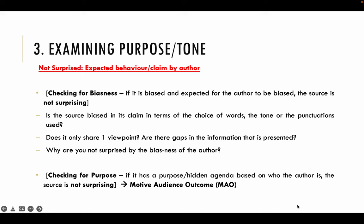Now, if you're not surprised at highest level, this means that this is an expected behaviour or claim by an author. This is where you'll need to check for biasness. If it is biased and you already expect the author to be biased, then the source is not surprising. But you'll need to explain yourself — why did you already expect the author to be biased? So ask yourself: is the source biased in its claim in terms of the choice of words, the tone or the punctuations used? How did the source-giver choose to communicate their idea? Is it only sharing one viewpoint? Are there gaps in the information present? Why are you not surprised by the author's biasness?